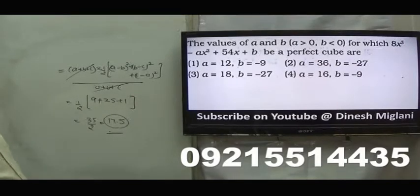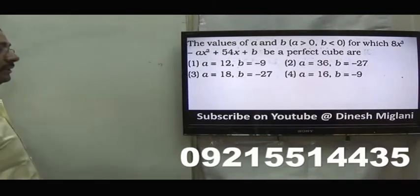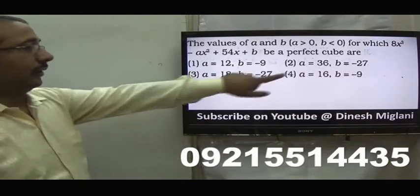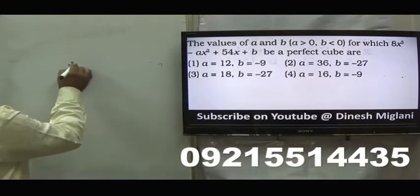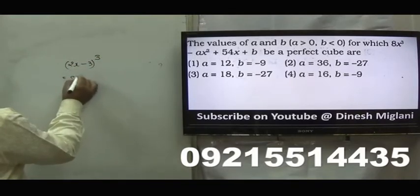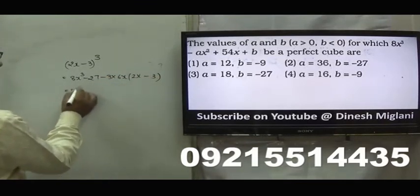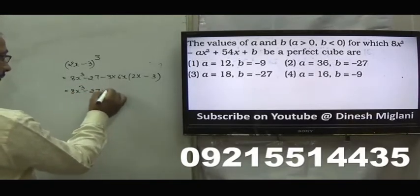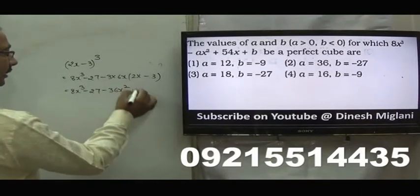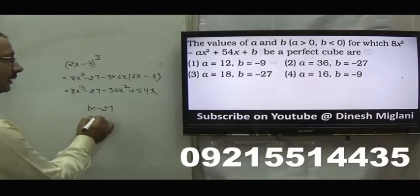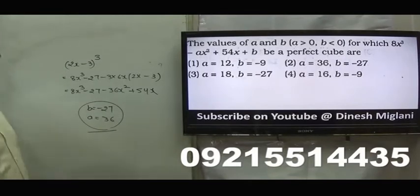The value of a and b for which this whole expression is a perfect cube. If I take that to be a perfect cube, 8x cube, then b must be a perfect cube. Taking b to be minus 27: 2x minus 3 whole cube equals 8x cube minus 27 minus 3 into 6x into 2x minus 3. This gives 8x cube minus 27 and 12 minus 36x square plus 36x. Comparing, b is minus 27 and a equal to 36. Answer is second one: b equal to minus 27 and a equal to 36.